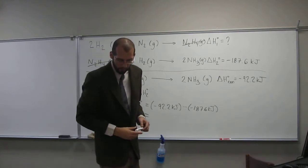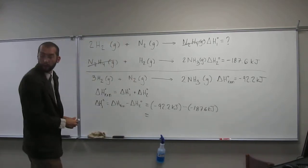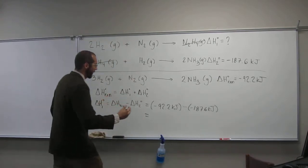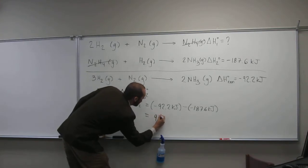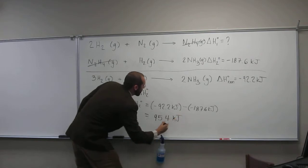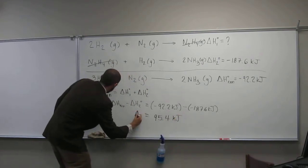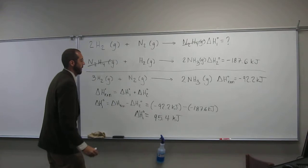95.4. What is it? Sorry? 95.4. Okay, thanks. 95.4 kilojoules is going to be delta H1.